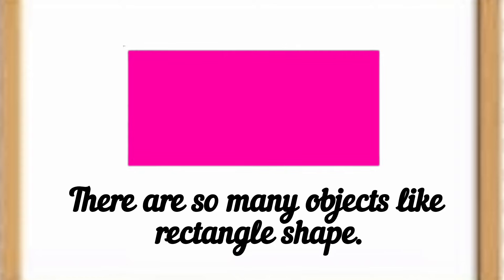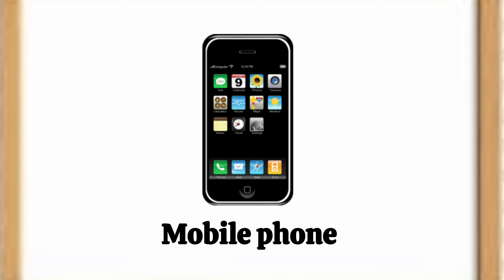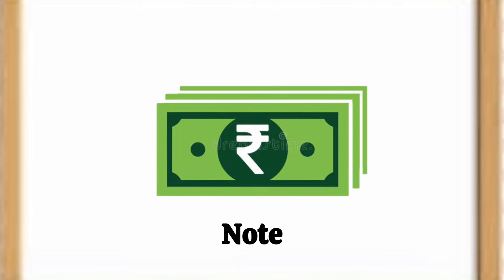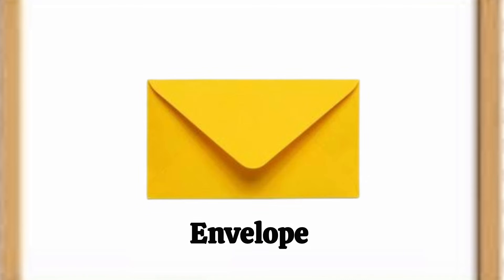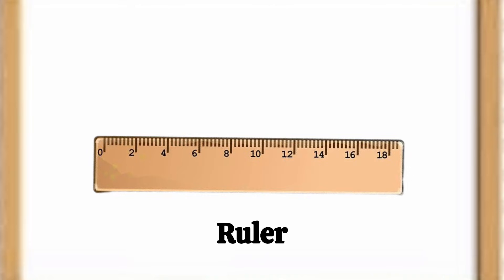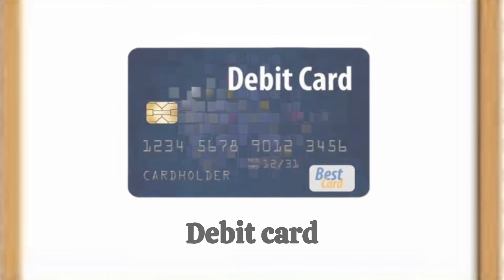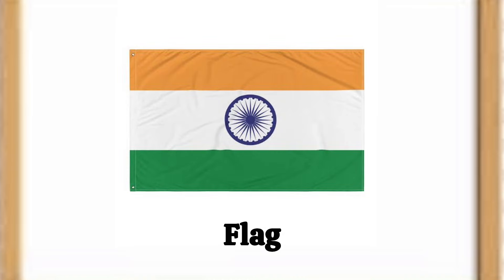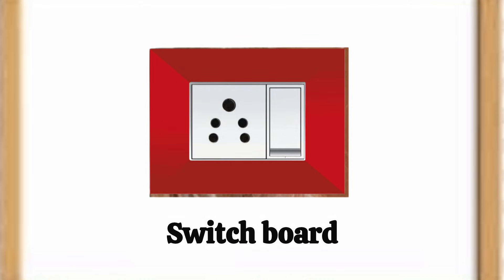There are so many objects with a rectangle shape. They are: TV, mobile phone, notebook, door, mat, chocolate bar, envelope, blackboard, ruler, bed, pillow, debit card, flag, table top, switchboard, chopping board, and more. Thank you!